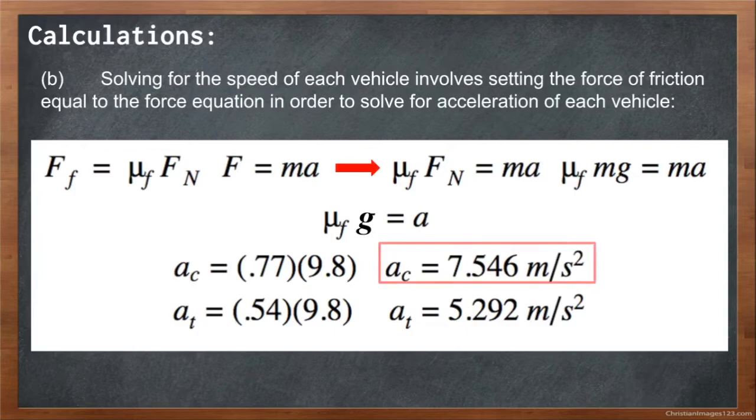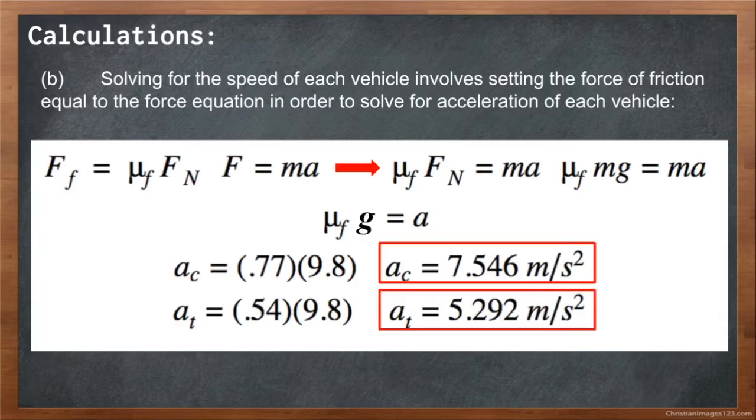When plugging in our values for the car and the truck, we get the car has an acceleration of 7.546 and the truck has an acceleration of 5.292, both in meters per second squared.